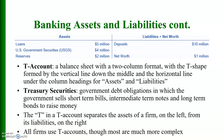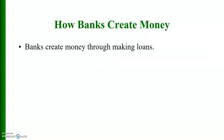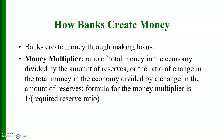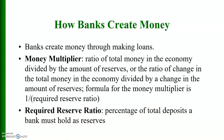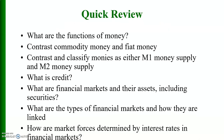Banks create money through making loans. The money multiplier is the ratio of the total money in the economy divided by the amount of reserves, or the ratio of the change in total money divided by the change in reserves. The formula for the money multiplier is 1 divided by the required reserve ratio. The required reserve ratio is the percentage of total deposits a bank must hold as reserves.